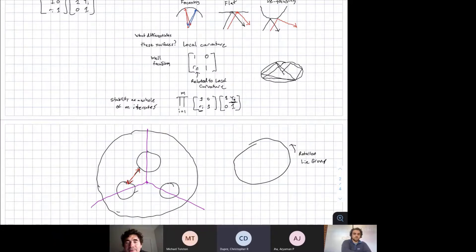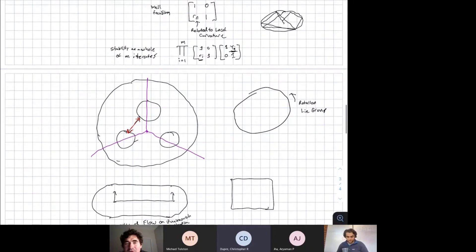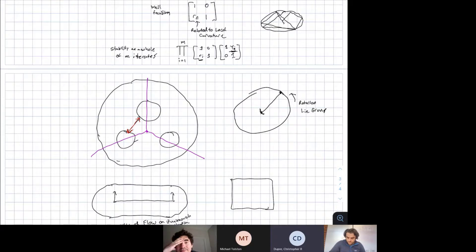When you do the symmetry reduction to a circle, the circle reduces to effectively this line segment. It's kind of like a toroidal map in that it's mapped onto itself. Your stability analysis turns into effectively a one-dimensional map.